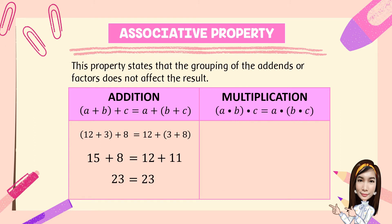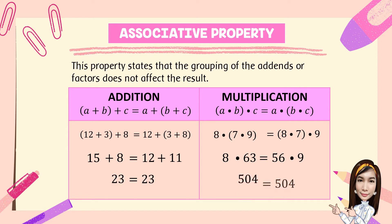For multiplication, the quantity (A times B) times C is equal to A times the quantity (B times C). For example: 8 times the quantity (7 times 9) is equal to the quantity (8 times 7) times 9. So 7 times 9 is 63, and 8 times 7 is 56. Then 8 times 63 is equal to 504, and 56 times 9 is also equal to 504. So in multiplication, the grouping of the factors does not affect the product. We did not change the order of the numbers; we just changed the way the numbers are grouped.